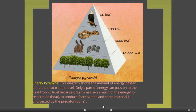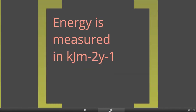When we finished last time, we looked at the unit for energy, which is kilojoules per metre squared per year. This gives us a good value to compare because it takes into account the amount of energy in kilojoules, the area covered, and also a time value — so it is kilojoules per metre squared per year.